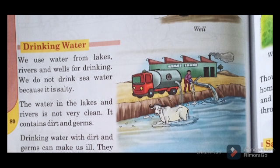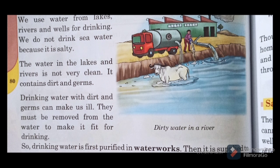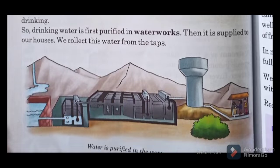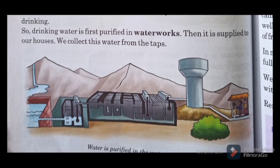We do not drink sea water because it is salty. The water in lakes and rivers is not very clean — it contains dirt and germs. Drinking water with dirt and germs can make us ill, so they must be removed to make it fit for drinking. You can see dirty water in a river because factories, garbage and other dirt go into the river. So drinking water is first purified in waterworks, where many filters are working to clean river water. Then it is supplied to our houses and we collect this water from the taps.